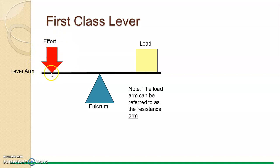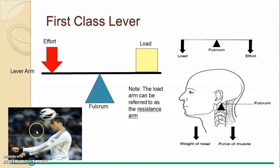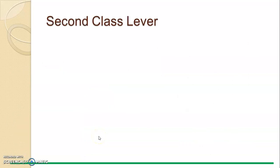In the body, the first class lever is found at the atlas and axis of the neck. When you pivot your head forwards and backwards, you're using a first class lever. The sternocleidomastoid at the back of the head pulls back, and the weight of the head at the front means the head is balanced. A sporting example is Cristiano Ronaldo heading a football, using the pivot of his head to apply force to the ball.